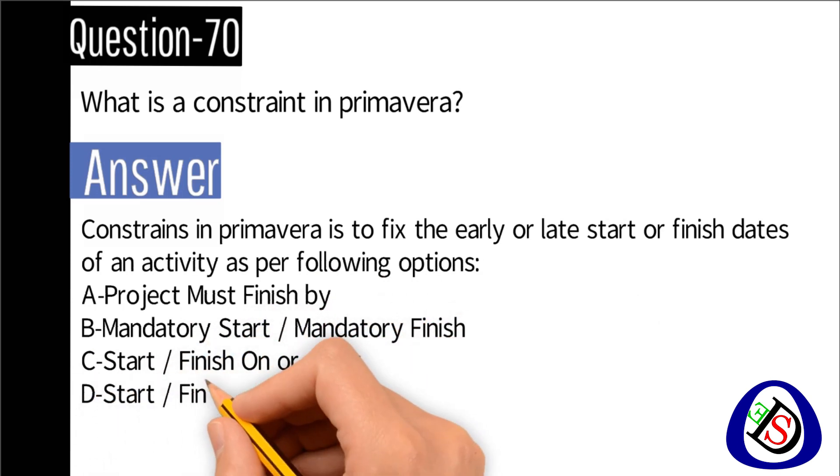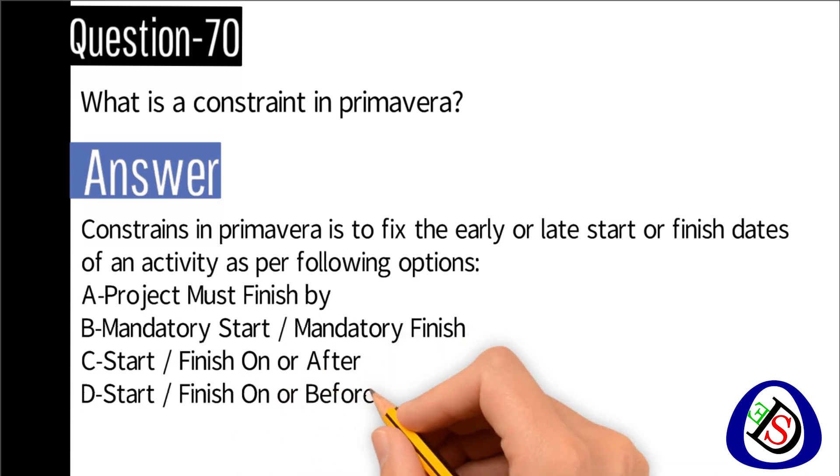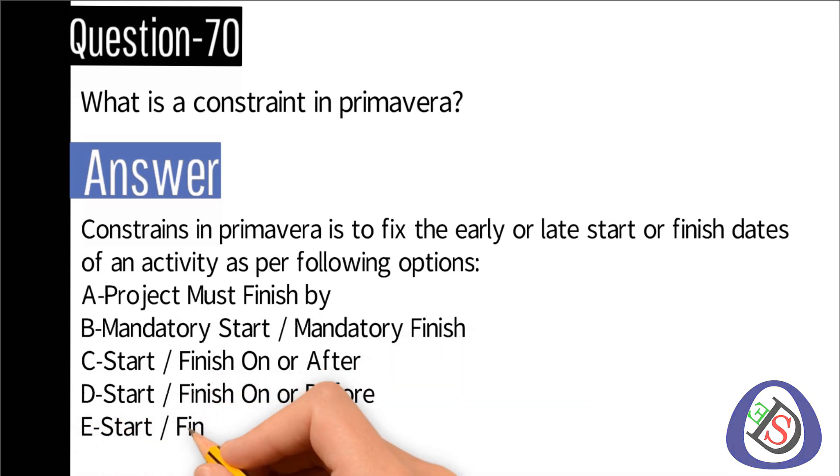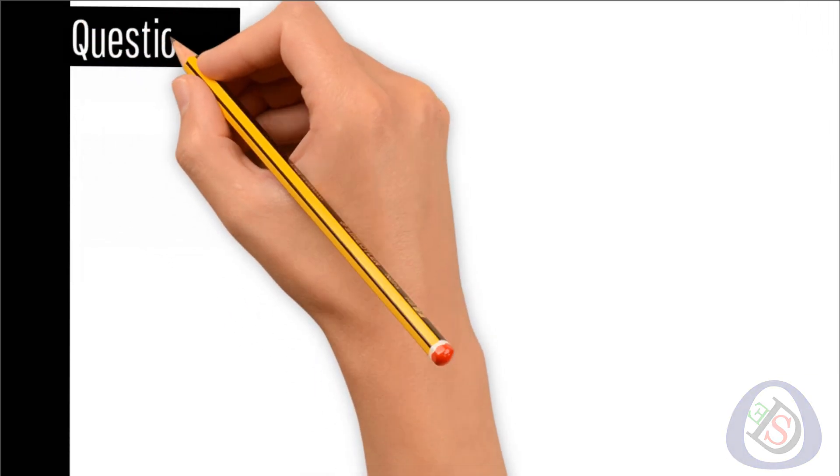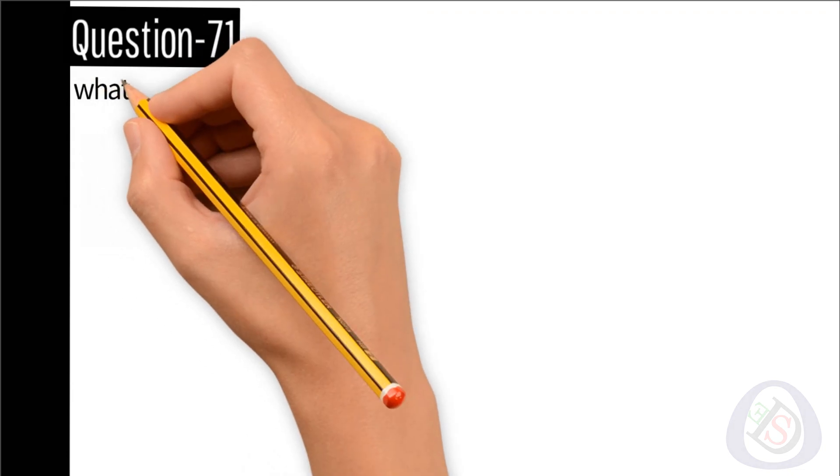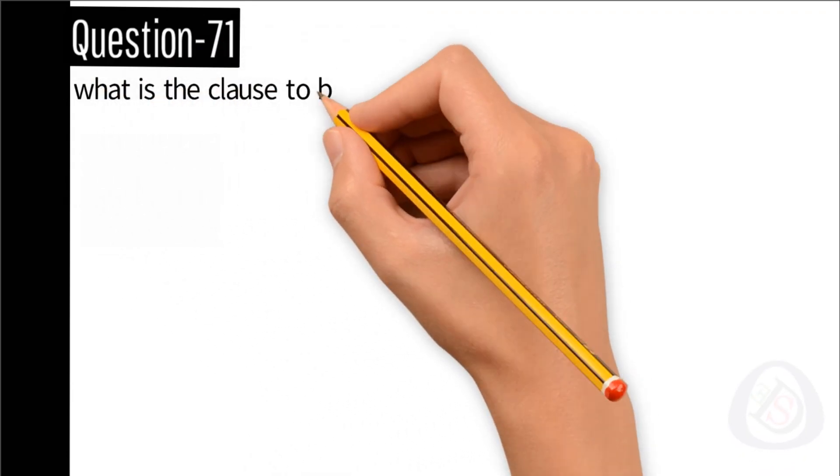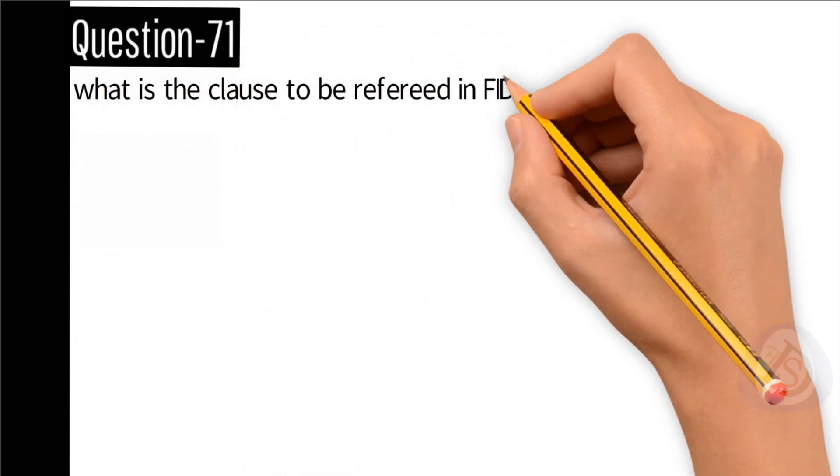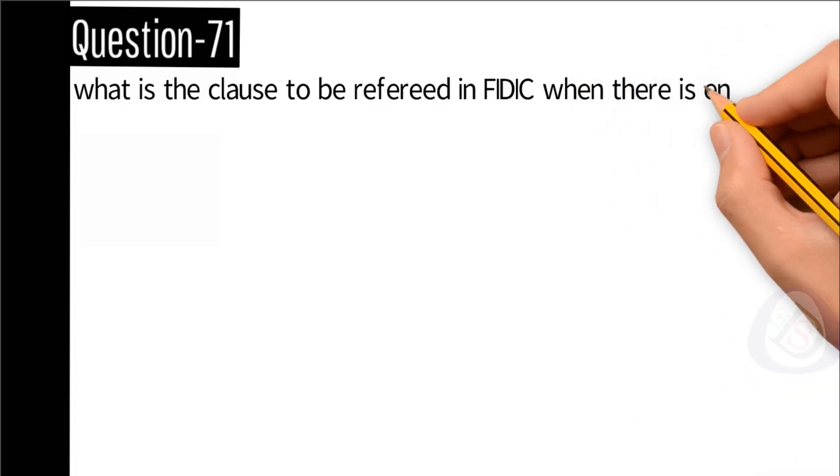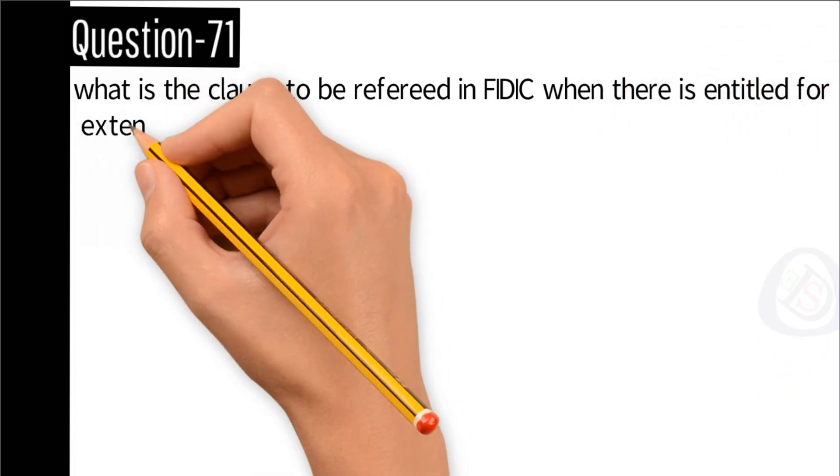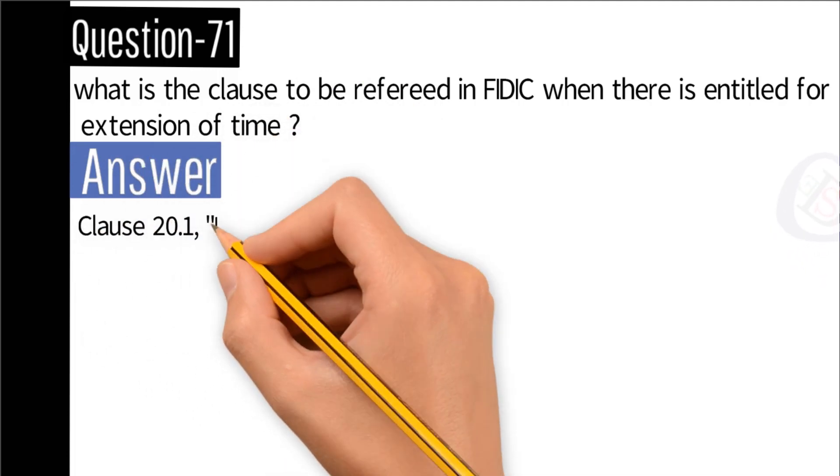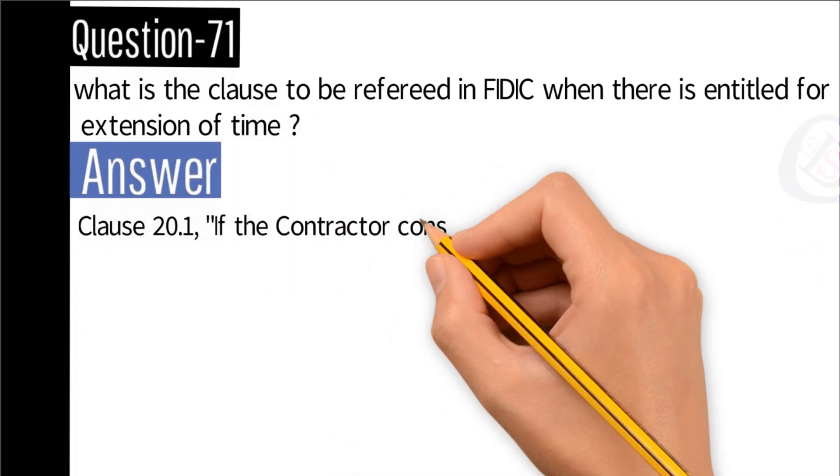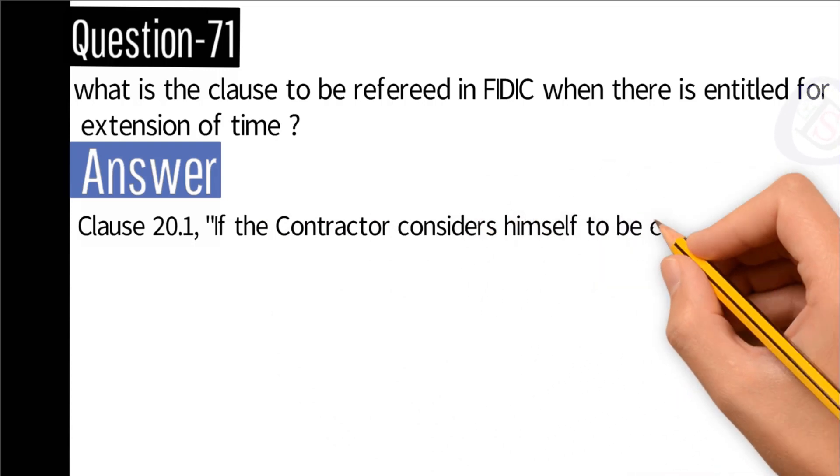B, mandatory start or mandatory finish. C, start or finish on or after. D, start or finish on or before. E, start or finish on. F, expected finish.